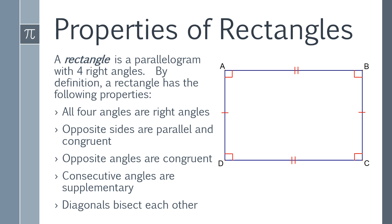Properties of rectangles: a rectangle is a parallelogram with four right angles. So by definition, since it's a parallelogram first and then a rectangle, the rectangle has the following properties: all four angles are right angles, opposite sides are parallel and congruent, opposite angles are congruent, consecutive angles are supplementary, and diagonals bisect each other.